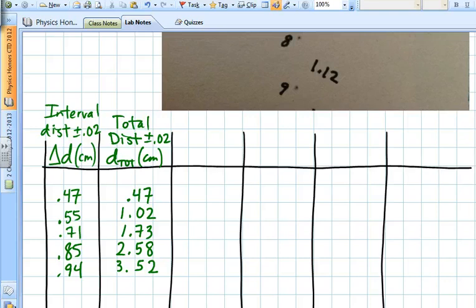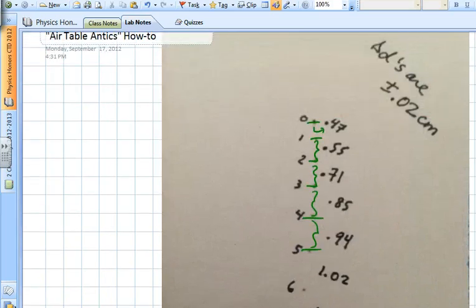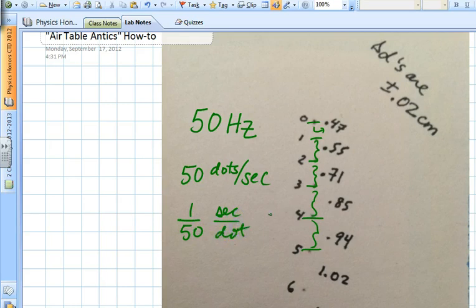We probably need to have one other column on this, the so-called elapsed time. We'll talk about the uncertainty for this in a short while. But this is 0.02, 0.04, 0.06, 0.08, and 0.10, and so forth. The reason that we know this is that this spark timer is set to 50 hertz, which means it's making 50 dots per second. So that means if it's 50 dots per second, it's 1/50th of a second per dot. So the time it takes to go from 0.4 to 0.5 is 0.02 seconds.